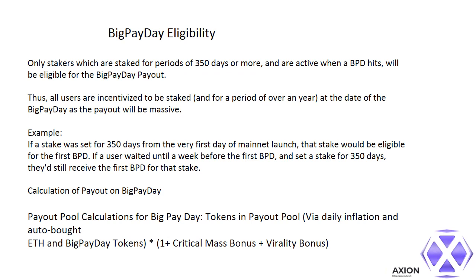Big Pay Day eligibility. Only stakers which are staked for periods of 350 days or more, and are active when a BPD hits, will be eligible for the Big Pay Day payout. Thus, all users are incentivized to be staked for a period of over a year at the date of their Big Pay Day, as the payout will be massive. Example: if a stake was set for 350 days from the very first day of mainnet launch, that stake would be eligible for the first BPD. If a user waited until a week before the first BPD and set a stake for 350 days, they'd still receive the first BPD for that stake.